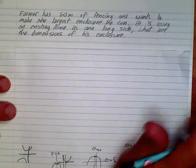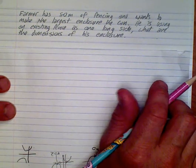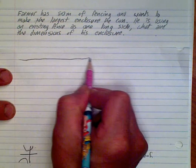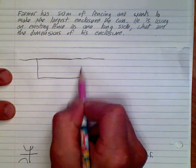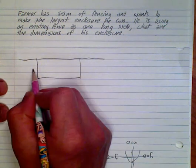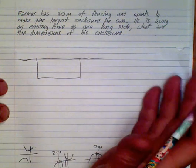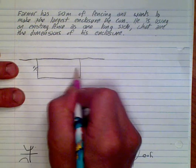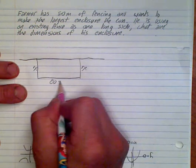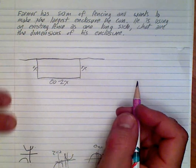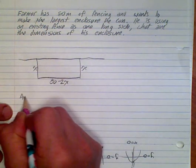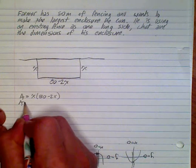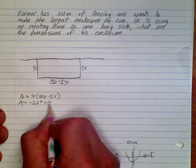A farmer has 80 meters of fencing and wants to make the largest enclosure he can, using an existing fence line. We'll draw a rectangular enclosure. I'll call the two shorter sides x each, leaving 80 minus 2x for the longer side. We're looking to maximize area, and area is simply length times width. So we write a quadratic: minus 2x squared plus 80x.